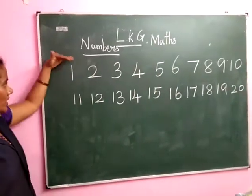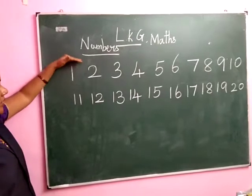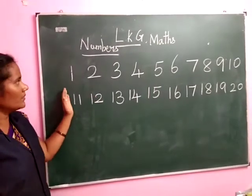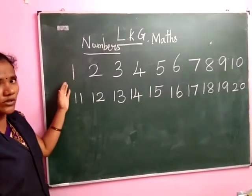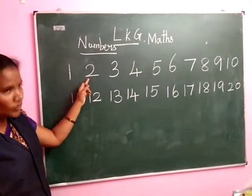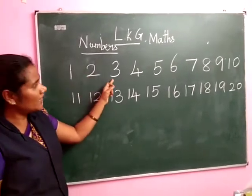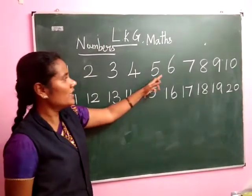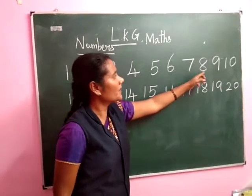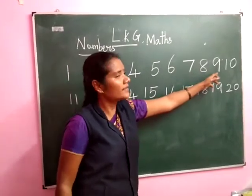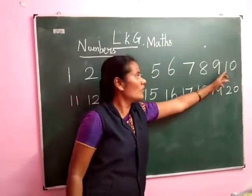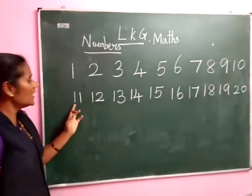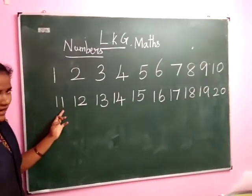Okay, inside this one — 1, 2, 3 — next: 11, 12. Continue the numbers. So that, say: 1, 2, 3, 4, 5, 6, 7, 8, 9, 10. Next: 1, 1 — 11.